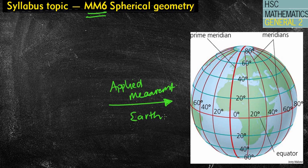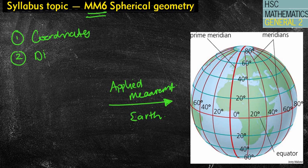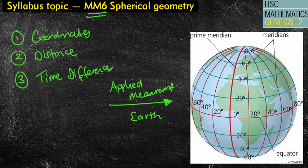So what will we be looking at? First of all, we'll be looking at coordinates or locations of different points on the globe. We'll also be looking at the distance from one point to another, and time differences — not so much time zones, but we'll see how they work. This lesson will be mostly just introducing Spherical Geometry and looking at coordinates.